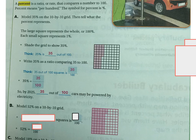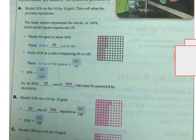Because 52 of 100, so 52 out of 100 squares is 52 over 100. 52% is the same thing as 52 over 100.